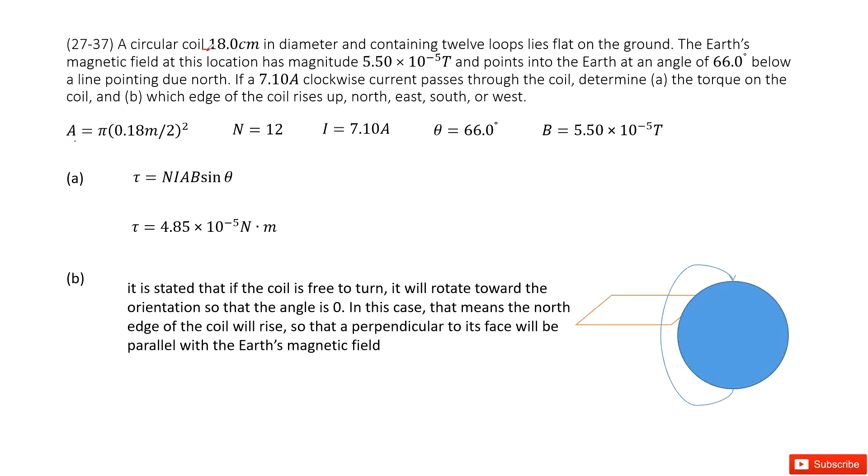The given is the diameter, so we can get the cross sectional area A. And how many turns? 12. The current, the theta, and also the magnetic field.